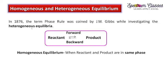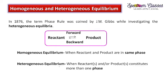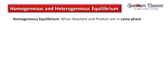Now coming to heterogeneous equilibria. First, we must understand homogeneous: 'homo' means same, so homogeneous means same throughout. When reactants and products are in the same phase, that equilibrium is known as homogeneous equilibrium. In heterogeneous equilibrium, reactants or products constitute more than one phase.